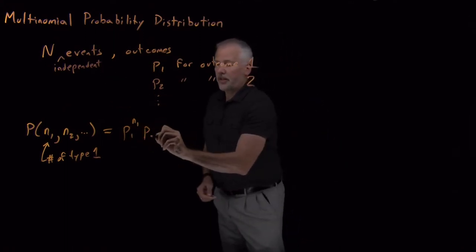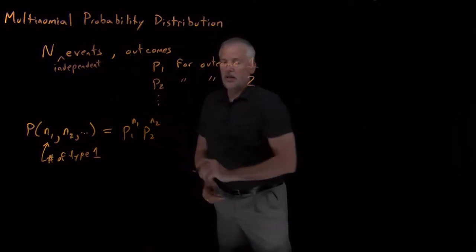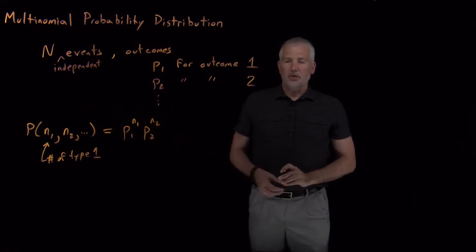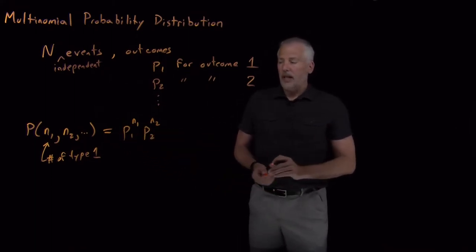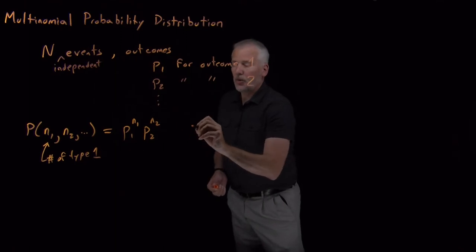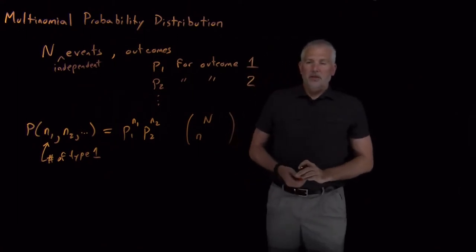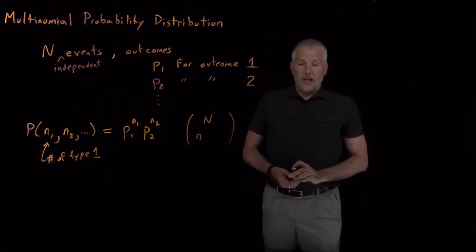The second type of event happens with probability P2, and that happens n2 times, so we multiply those together as well. And then the number of ways of shuffling these independent n1 outcomes together that are all the same, we would multiply that by big N choose little n.